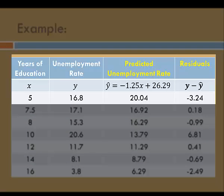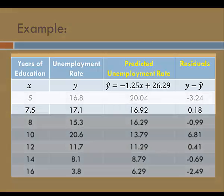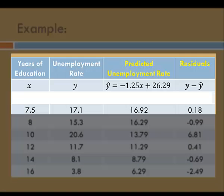For example, when the years of education is 5, the observed unemployment rate is 16.8, but the predicted unemployment rate is 20.04. The difference between the two is negative 3.24 — this is the residual at this particular value of x. When the years of education is 7.5, the observed unemployment rate is 17.1 and the predicted unemployment rate is 16.92, giving a difference of 0.18.